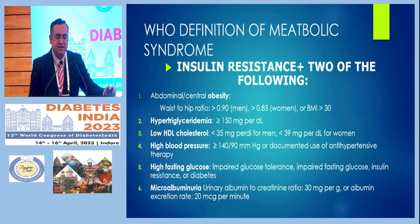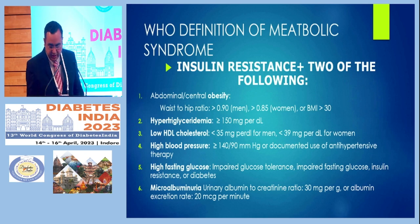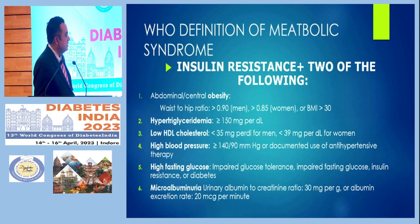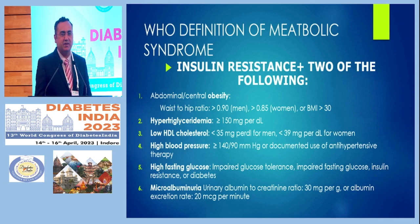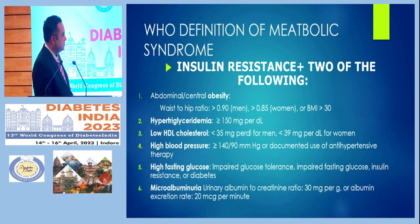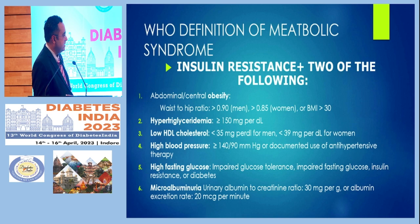What about the definition? I have collected two definitions. What includes Metabolic Syndrome and why we want to target them. Take the WHO definition — it includes insulin resistance, obesity, hypertriglyceridemia, low HDL, high blood pressure, and high fasting blood sugar. That is the WHO definition.